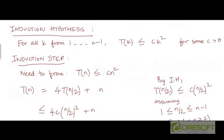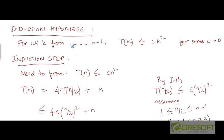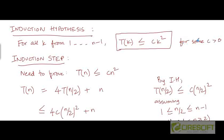Moving to the induction hypothesis: for all values k less than n, ranging from 1 up to n−1, we assume T(k) ≤ c·k² for some positive constant c. Of course c must be greater than or equal to 1 for the base case to be satisfied, but we can aggregate all those constraints at the very end. For now, let's assume the claim is true for some positive constant c.